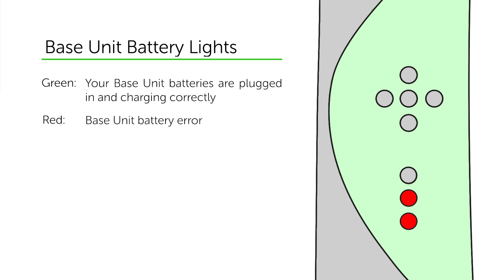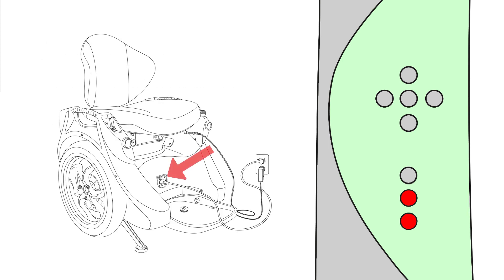If either lights are red, it means there is a battery error. You should unplug your Omeo's power cord and wait 5 seconds before plugging it back in again. If this error keeps occurring, you need to get in contact with your Omeo agent.